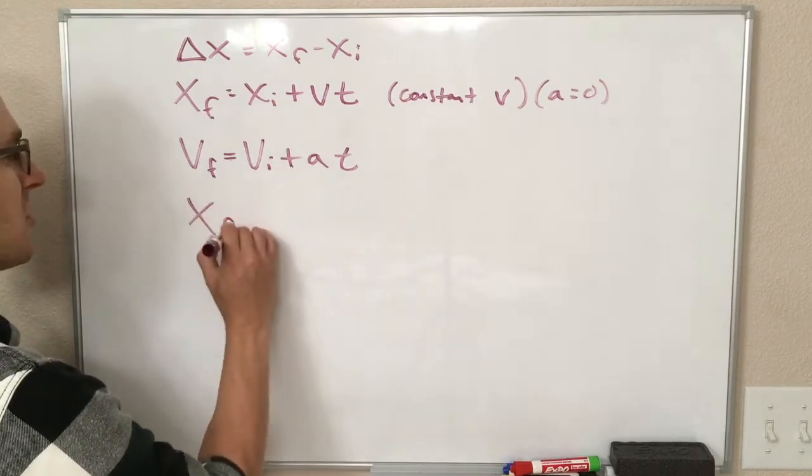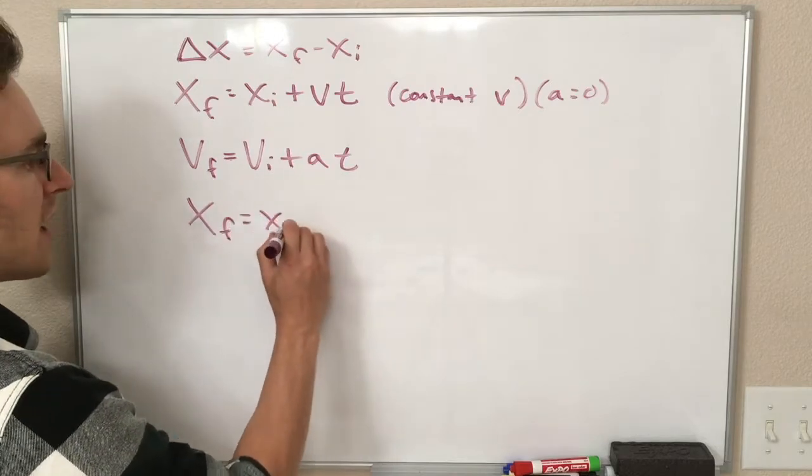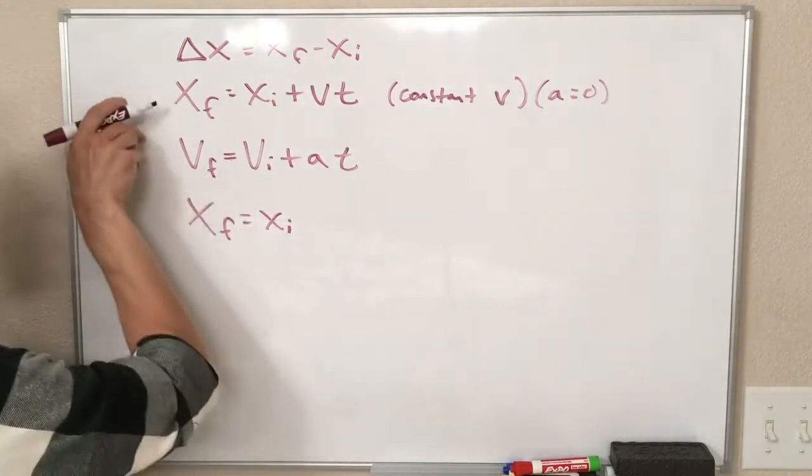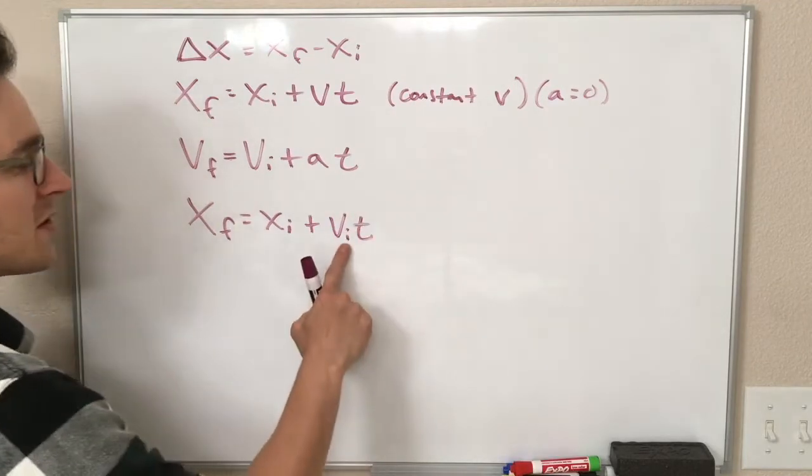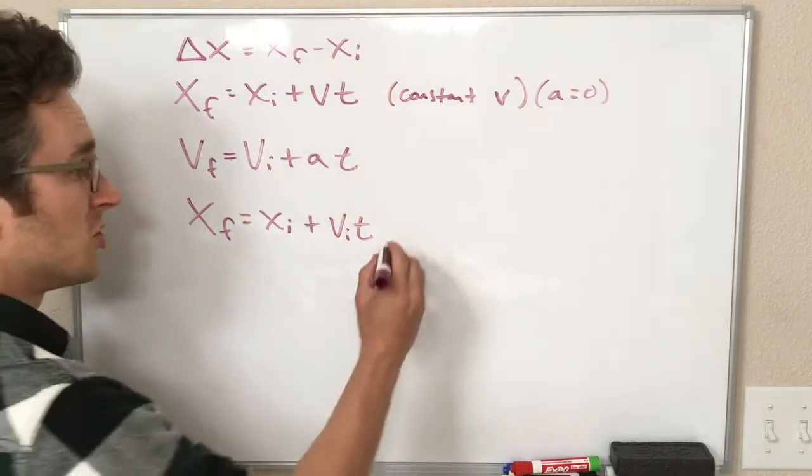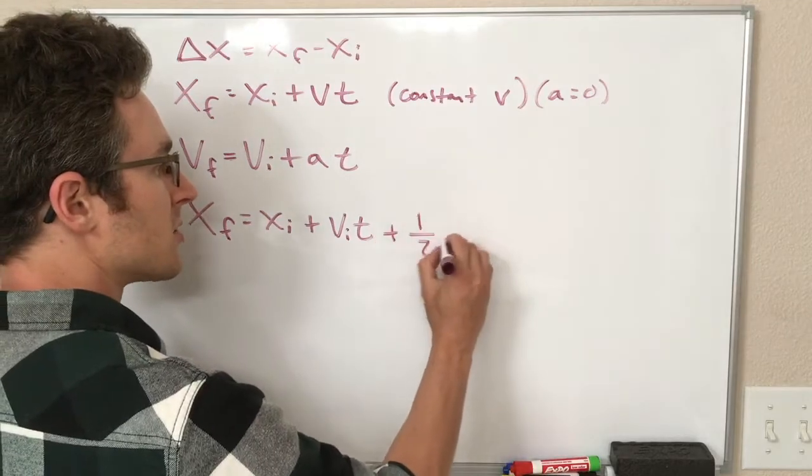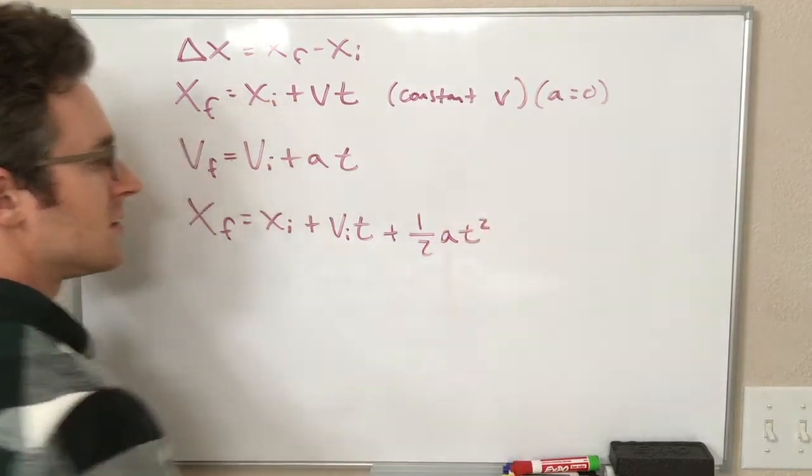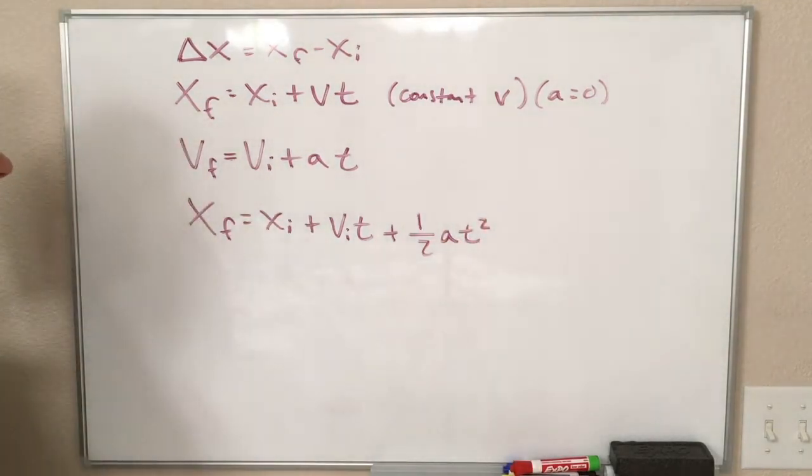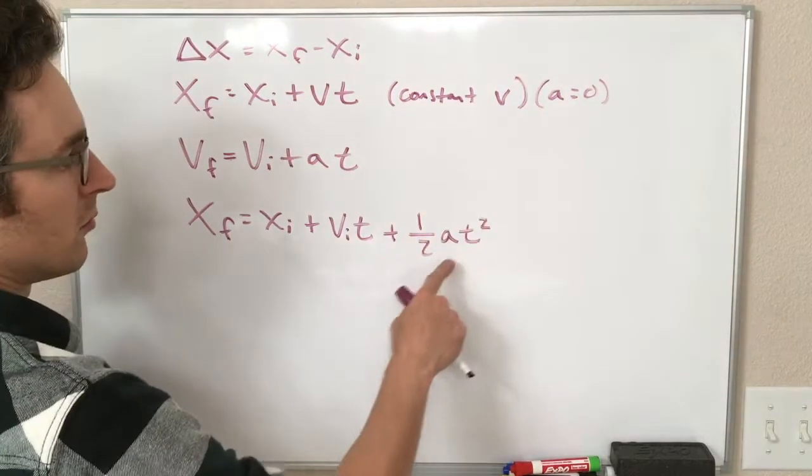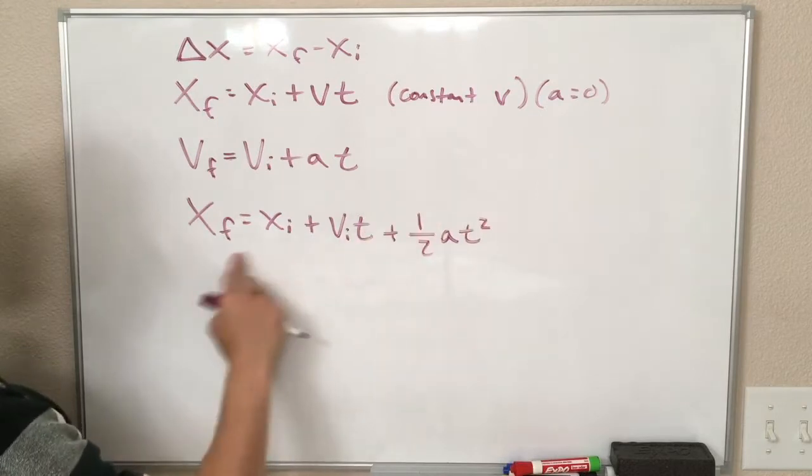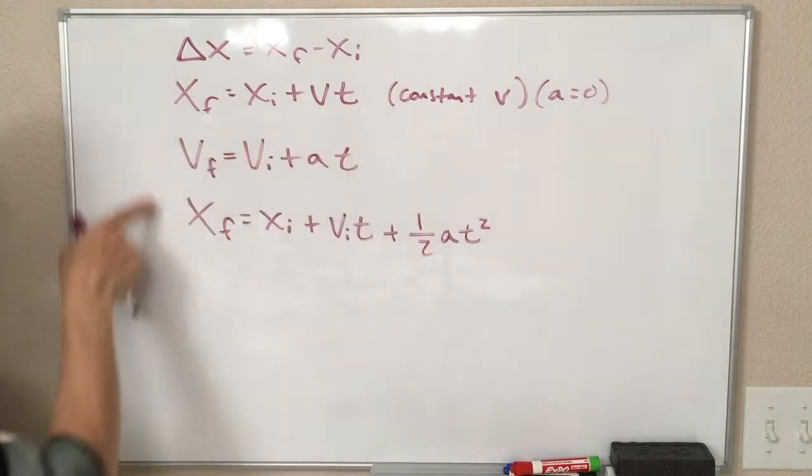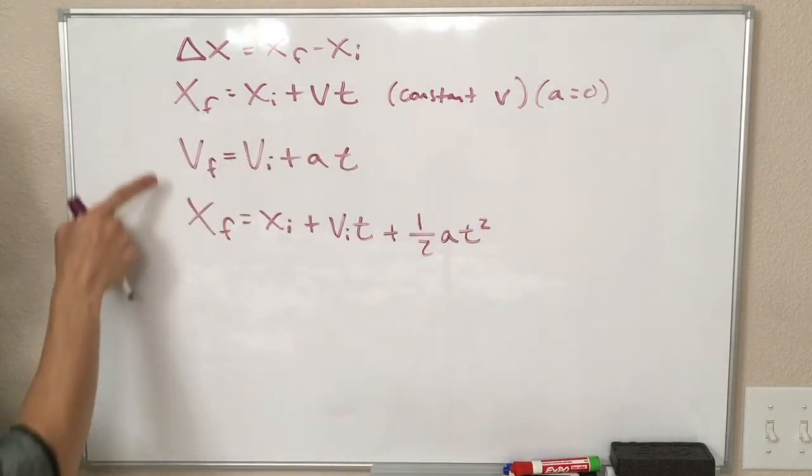Then we have an equation for how our position changes in time if we have acceleration. So that looks just like this equation, x-initial plus v-initial t. Now this is v-initial because our velocity could be changing, plus another term, one-half at squared. And remember, if a equals zero, we plug a in here equals zero, that term equals zero, and we get back that equation from before. So really, this is just the simplified version of that.